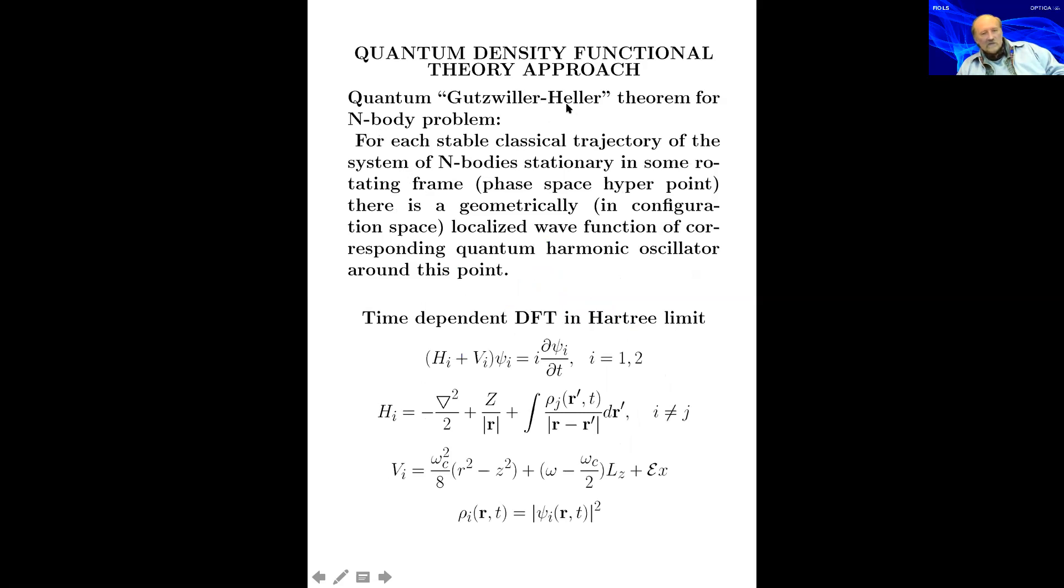This is basically the quantum density functional theory approach. I call it Gutzwiller-Heller theorem for n-body problem. For each stable classical trajectory of the system of n-body stationary in the rotating frame, there is a geometrically localized wave function of the corresponding quantum harmonic oscillator at this point. This extends to the non-stationary trajectories of certain symmetry that the packets around are moving, but they are slightly oscillating in shape because the trajectory is not frozen in the rotating frame.